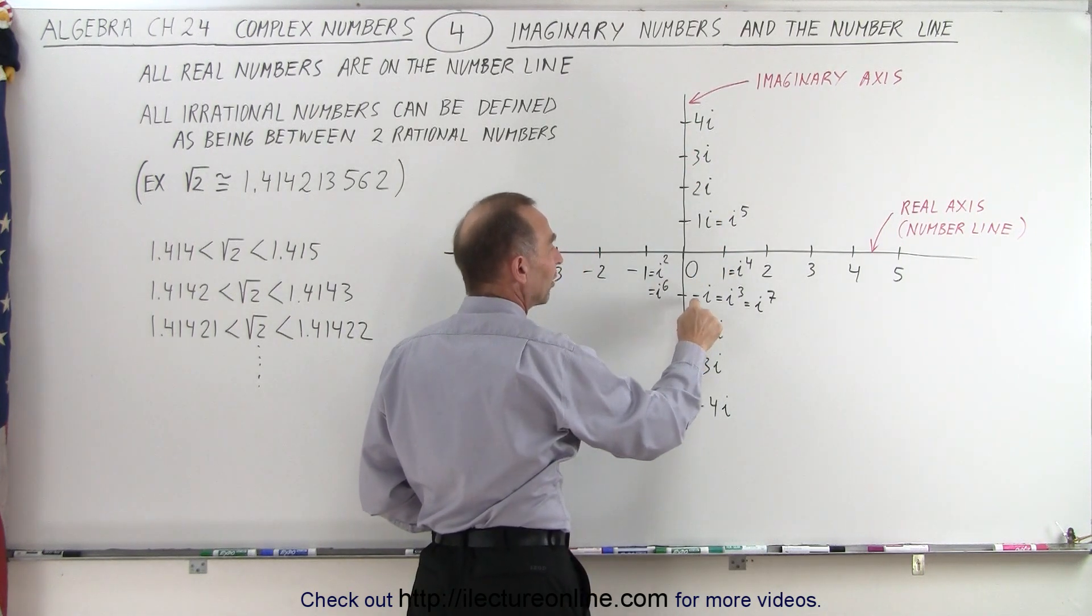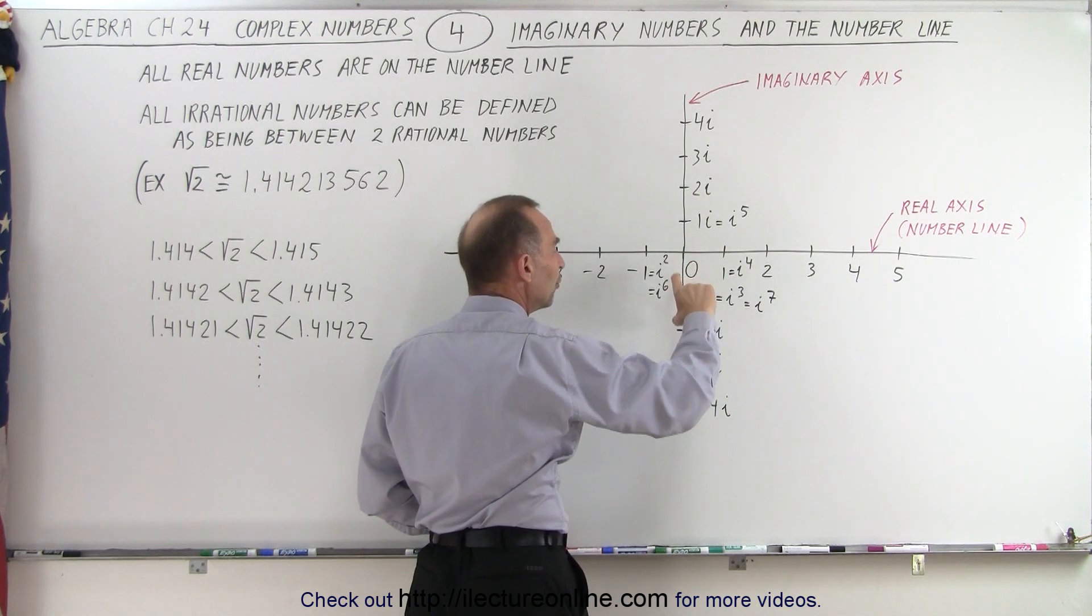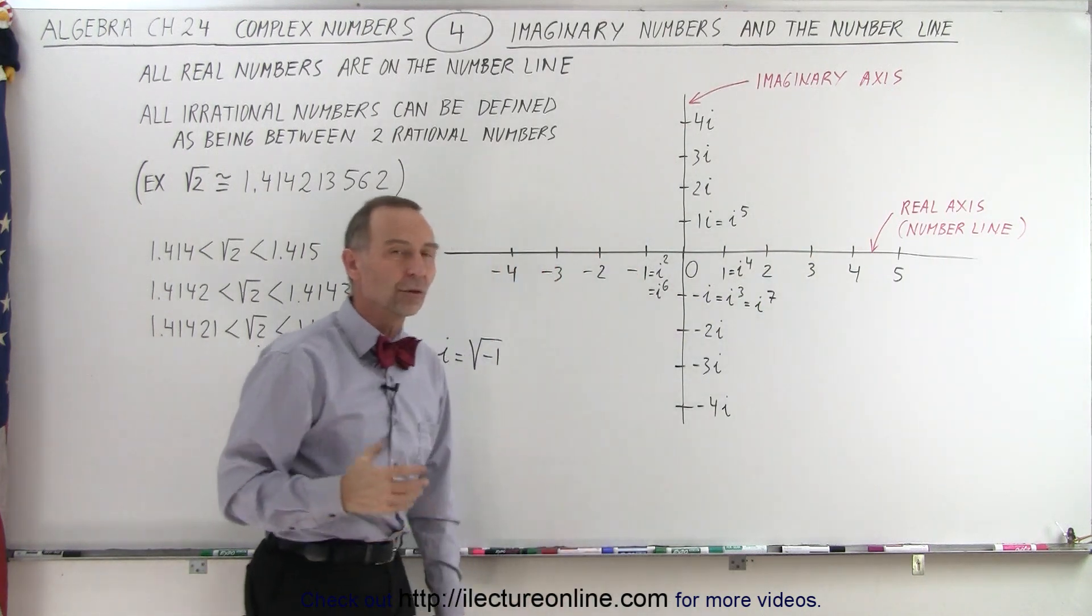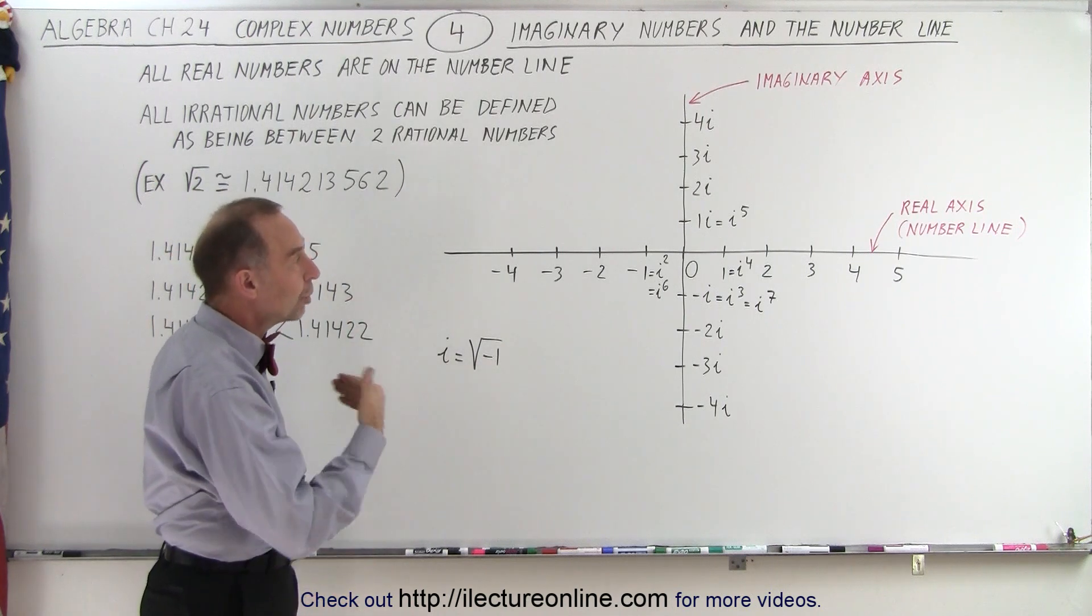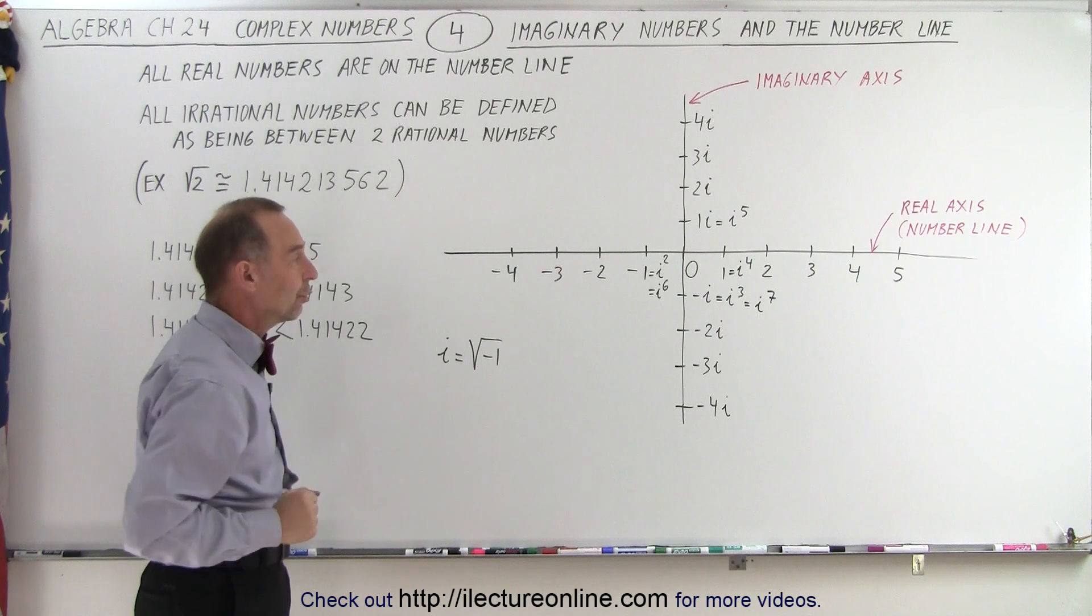And if we go in the negative direction, that's minus i, minus 2i, minus 3i, minus 4i, by moving one unit away, and those units are the exact same size as the units on the real number line. So at least we're able to place the imaginary numbers as multiples of i or negative multiples of i in the negative direction.